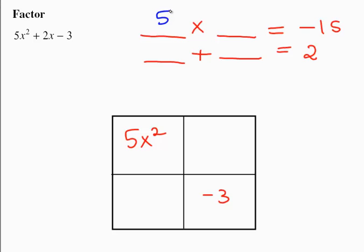So 5 and 3 are going to work for us. And since they add up to a positive 2, the 3 is the one that has to be negative. So the two terms that got combined together were 5x and negative 3x.